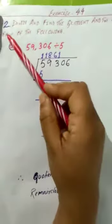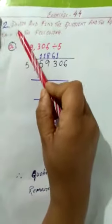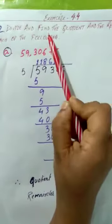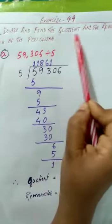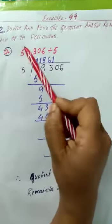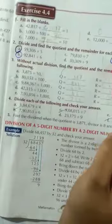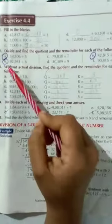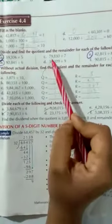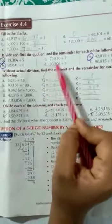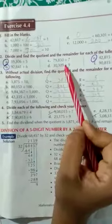In Question 2, we have to divide and find the quotient and the remainder for each of the parts. There are some parts: A, B, C, D, E, and F. I will do a few of these and the rest you have to do by yourself.